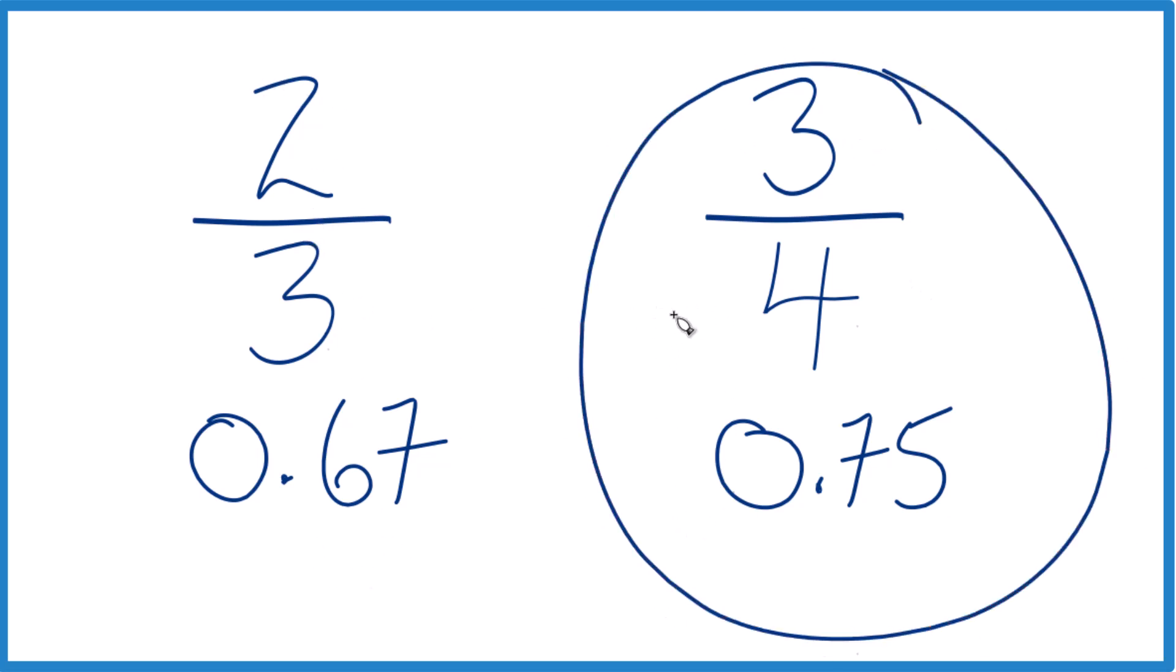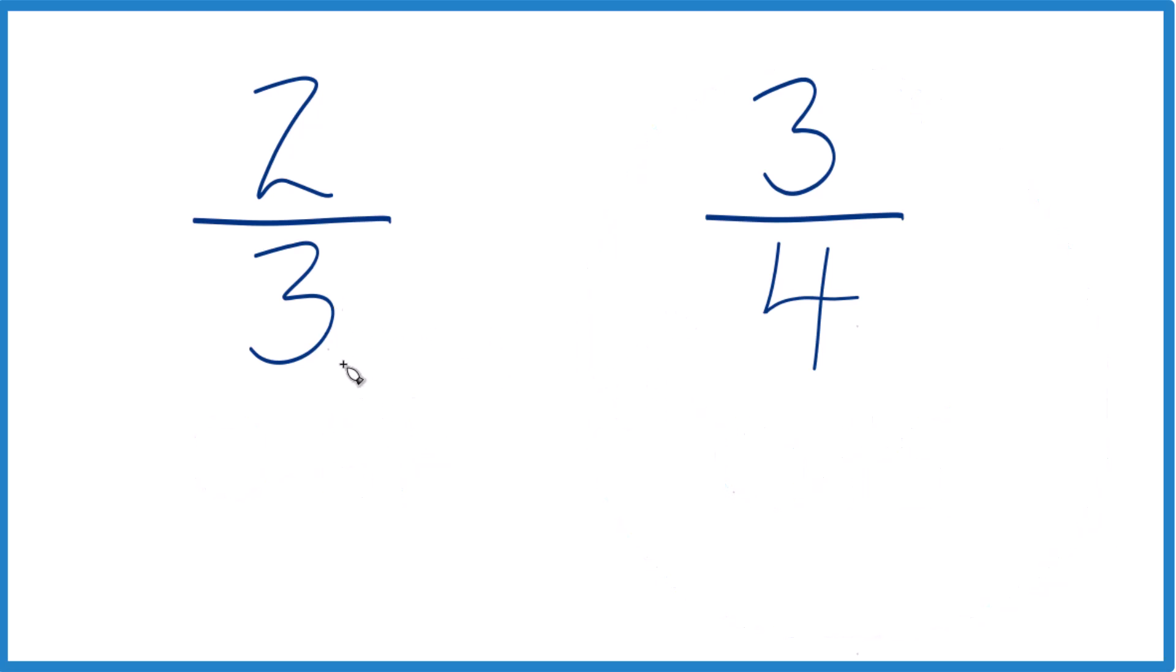The other way we could do this is like this. If we get the same denominator here, then we can compare the numerators. So let's say three times four, and over here four times three, because both of those will give us 12.